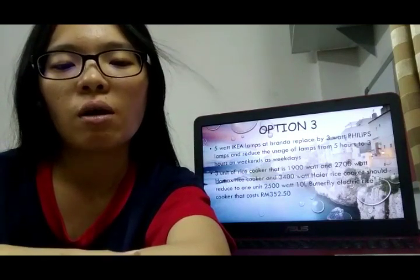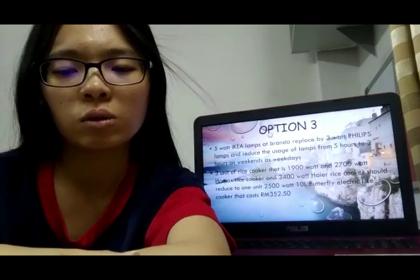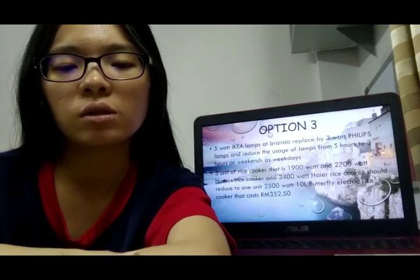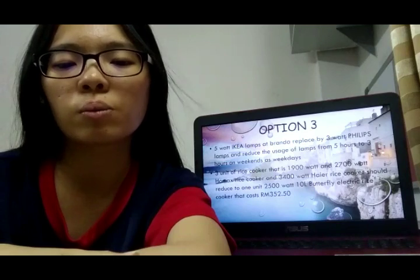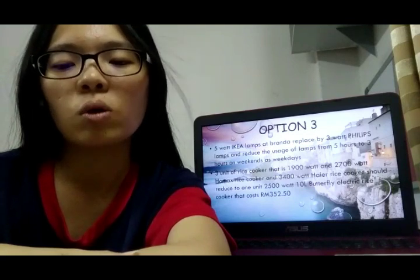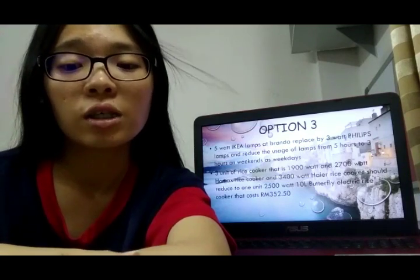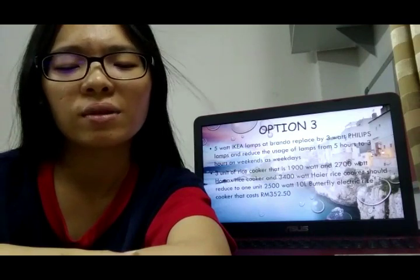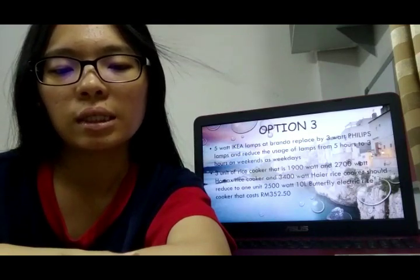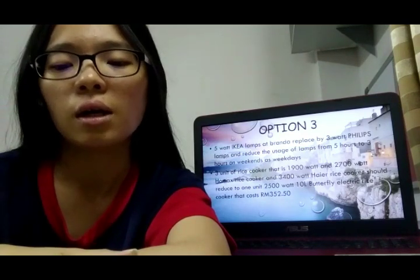Three units of rice cookers — a 1,900W, a 2,700W, and a 3,400W model — should be replaced by one unit of a 2,500W 10-litre Butterfly electric rice cooker costing RM352.50. The quantity of rice cookers used would reduce from three units to one unit, thereby reducing electricity consumption.